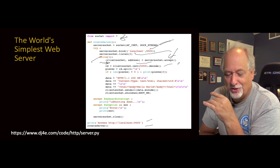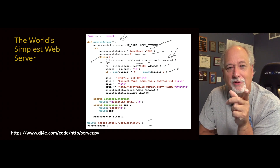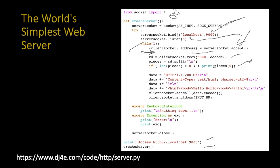It sends the same document no matter what the URL is. All we do with the URL is print it out to prove we got it. Then we construct a response. Go back to RFC 2616 and it will tell you what this response is supposed to look like. It sends back a 200 OK — content type text/HTML, character set UTF-8, a blank line, and then some HTML.